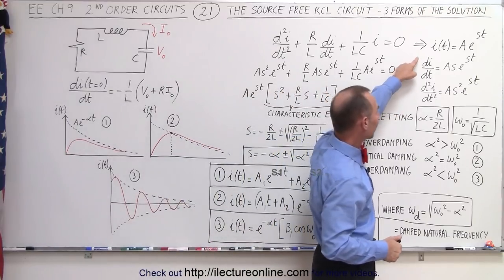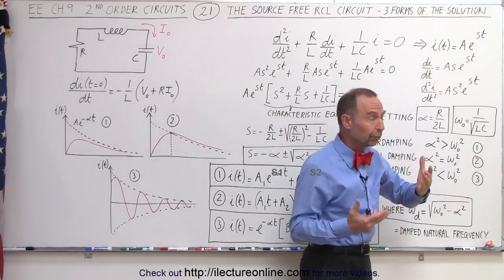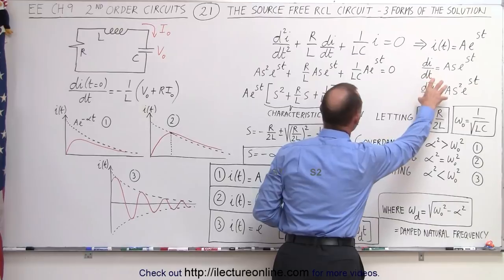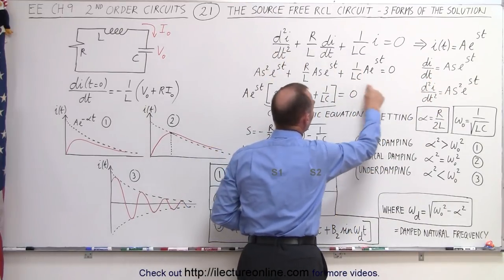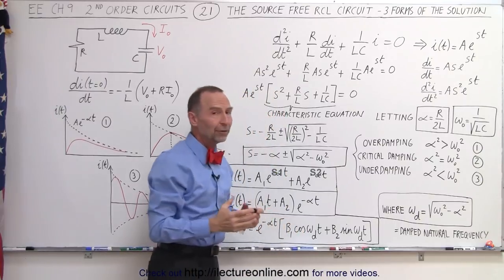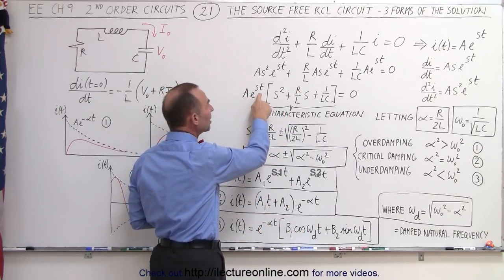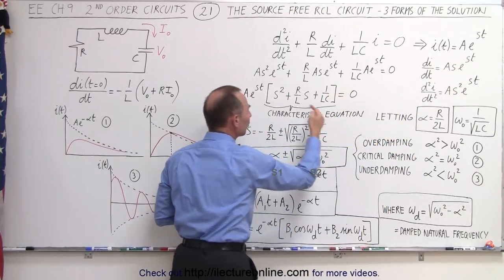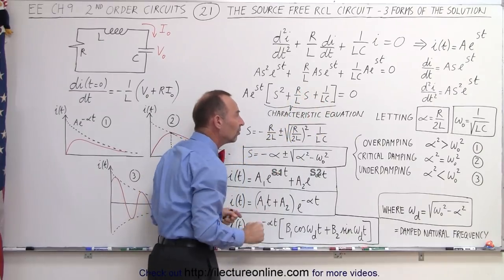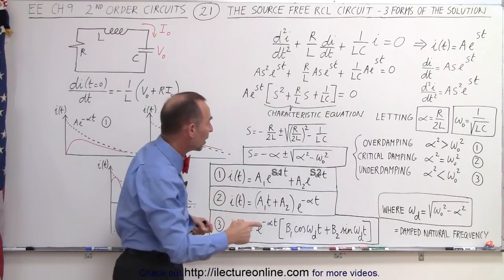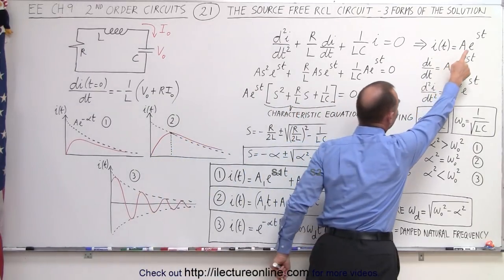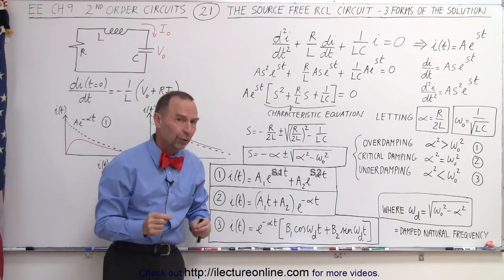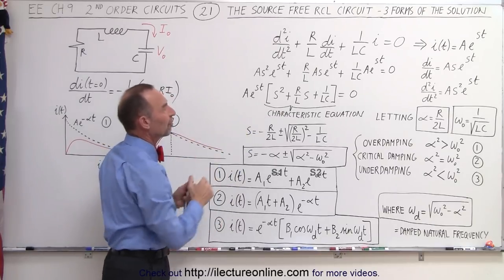If we take the first and second derivative of the general solution — the current as a function of time — we get these two functions. If we plug those back into the differential equation, we end up with a differential equation in this format. If we then factor out A and e to the st, which is the general form of the solution, we're left with a remainder that includes the resistance, inductance, and capacitance. We can see that we have a characteristic equation dependent upon the variable s, which is in a quadratic form — the characteristic equation of that differential equation.